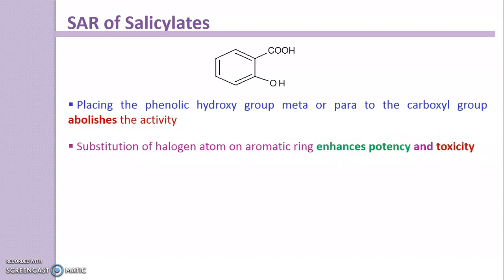Substitution of halogen atoms on the aromatic ring enhances potency and toxicity. If you introduce halogen atoms like fluorine or chlorine to the salicylic acid ring, it produces enhanced potency but at the same time produces toxicity.